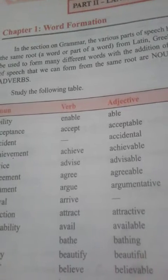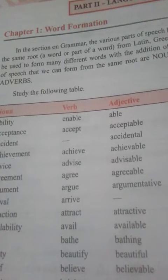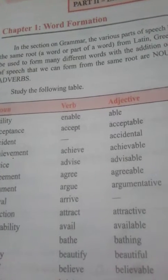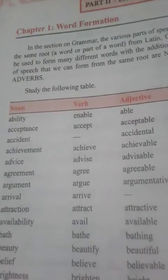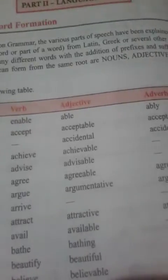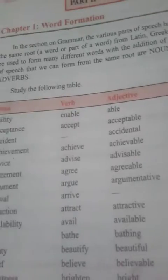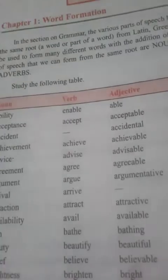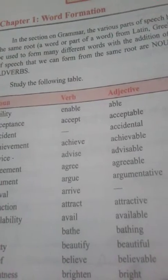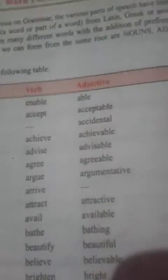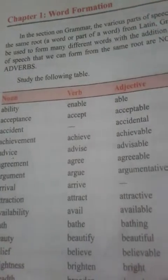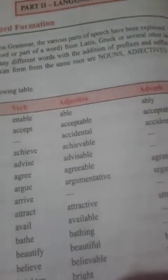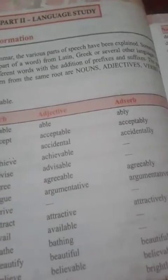Dear students, here is the table. Study the following table carefully. We will see the first entries: noun — ability, verb — enable, adjective — able, adverb — ably. Next: acceptance, accept, acceptable, acceptably.